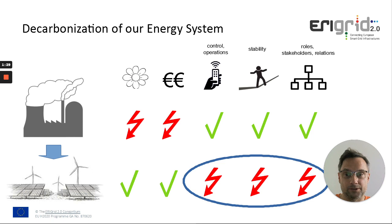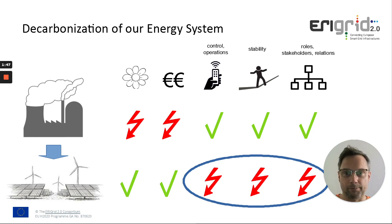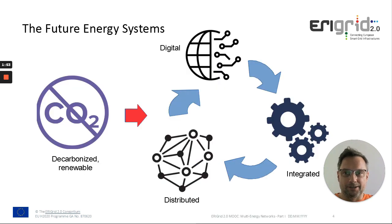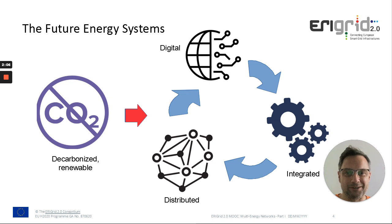Stability is another issue. These sources are typically connected with power electronic converters, so we don't have the rotating inertia of the synchronous generators anymore. And the stakeholder and players situation is much more complicated because we have distributed generation with millions of solar panels instead of just three big power plants. To overcome these challenges, we typically have a mix of some digital technology, some integration of sectors, and some distributed systems — three ingredients to make this decarbonization possible.